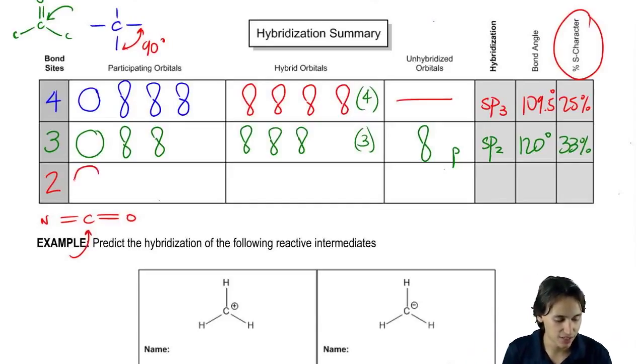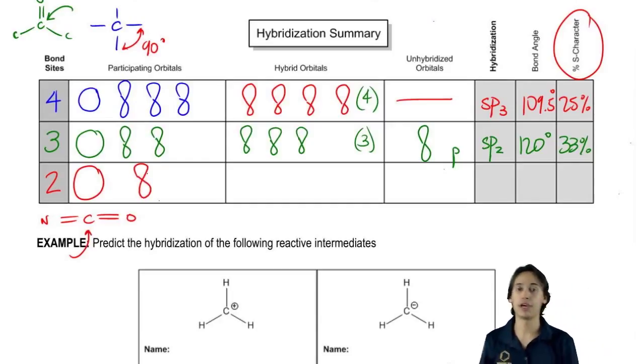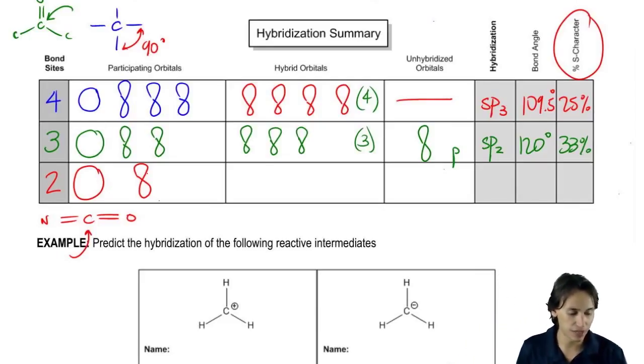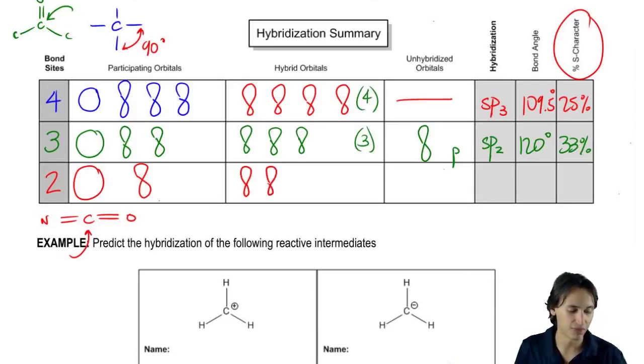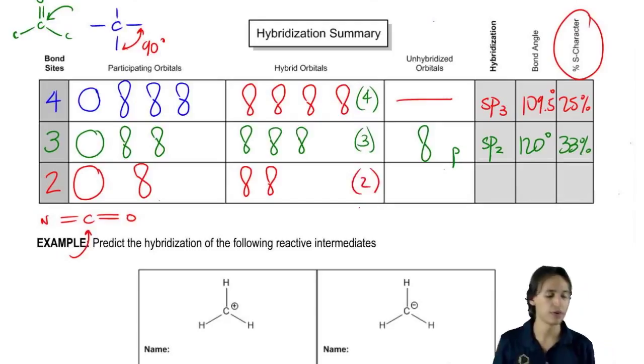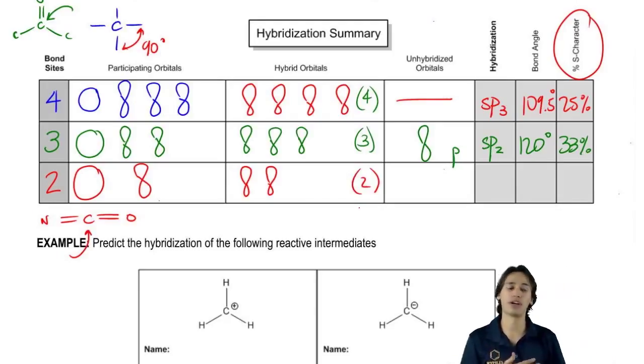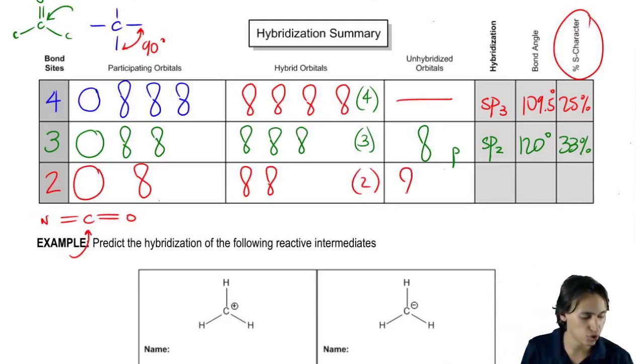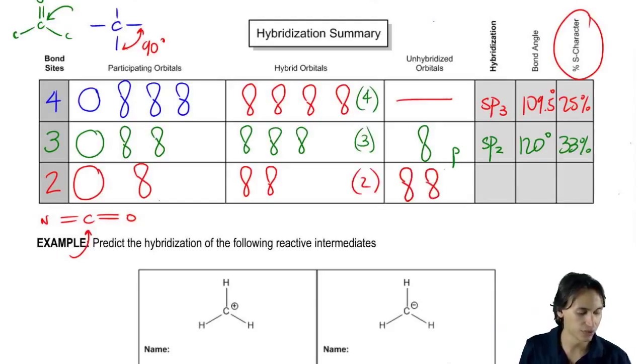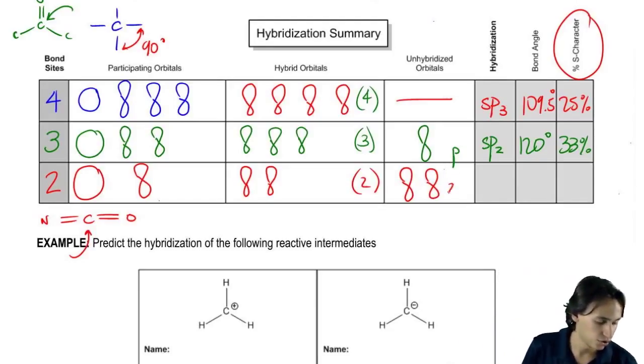So I'm going to take an s and I'm going to take a p. And what that means is that when I go ahead and combine these together, these are also going to make those weird looking orbitals, but I'm going to get even less of them. In this case, I'm only going to get two. And that means in terms of unhybridized orbitals, now I'm going to have two p's just left over.